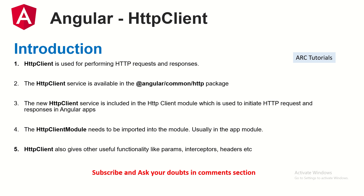To use it, we need to import the HTTP Client Module in the app module. Once we do that, we can make HTTP calls. HTTP Client is required in every component wherever you are making an HTTP call. HTTP Client also has a lot of other utilities like params, interceptors, and headers, through which you can easily manage and send data and other important information that's mostly required by most APIs. We will learn all about that as well, so stay tuned.